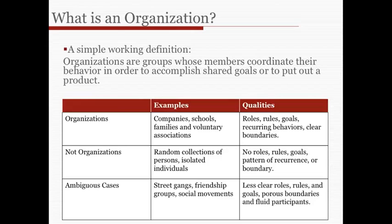Examples that aren't organizations seem to fall short of this definition. Random collections of persons or isolated individuals have no roles, rules or goals, patterns of recurrence in their behavior, or even a boundary to where that group begins or ends. Ambiguous cases are somewhat unclear — some features of the definition may be lacking. For example, with street gangs, friendship groups and social movements, we have less clear shared goals, porous boundaries, fluid participants that come and go, and less clear rules for behavior.